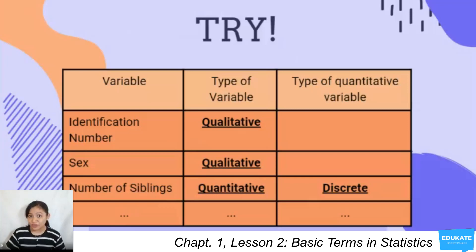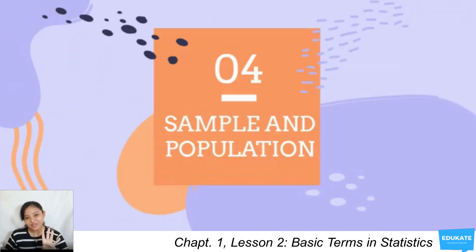Next, number of siblings. Now we know that you can count number of siblings. So the type of variable for that is quantitative. Now, type of quantitative variable. That can be discrete or continuous. We wrote there discrete because wala naman tayong number of siblings that can be measured by 1.5 or 2.7. So a general rule of thumb, pag discrete ka, pwede mong i-count by whole numbers. Pag continuous, you can have measurements na 1.7, 2.6, 2.5, and so on. So you can try this on your module. You have there the continuation of the table.